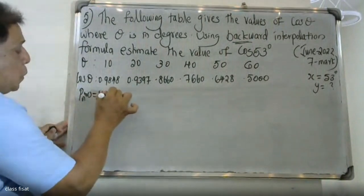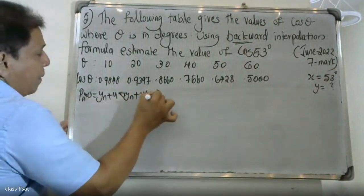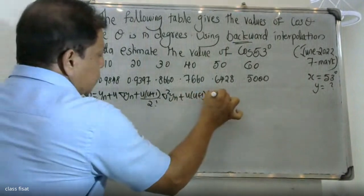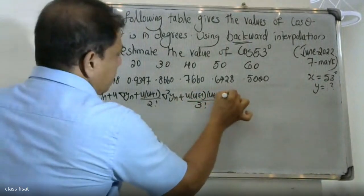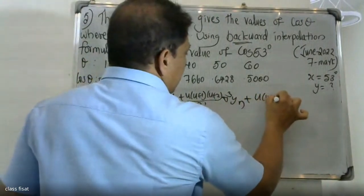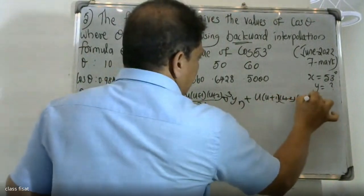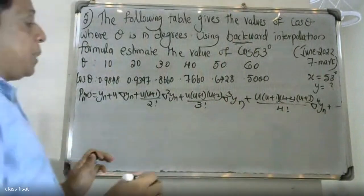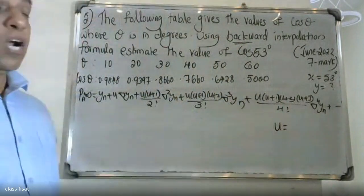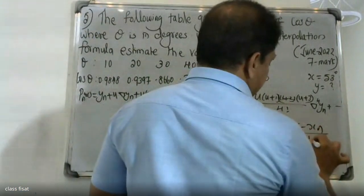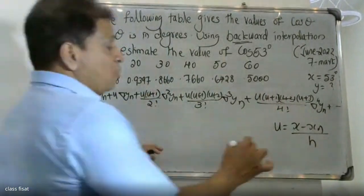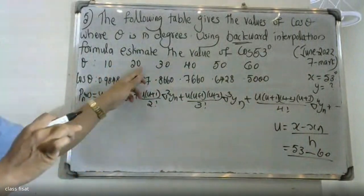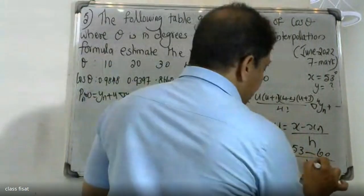Newton's Backward Interpolation formula is: p(x) = yn + u·Δyn + [u(u+1)/2!]·Δ²yn + [u(u+1)(u+2)(u+3)/4!]·Δ⁴yn + ... where u = (x - xn)/h, and xn is the last value in the table.